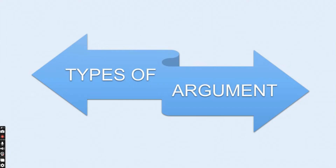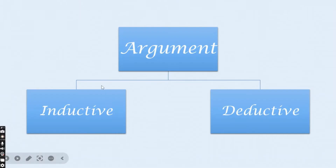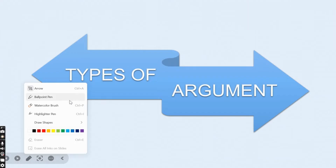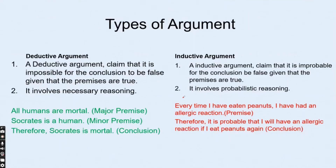Welcome back to the Darshan channel. Today we are going to discuss the types of arguments. There are two main types of argument being discussed: the first one is the inductive argument and the second is the deductive argument.